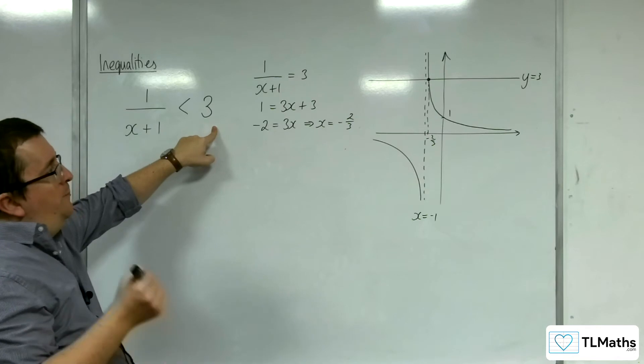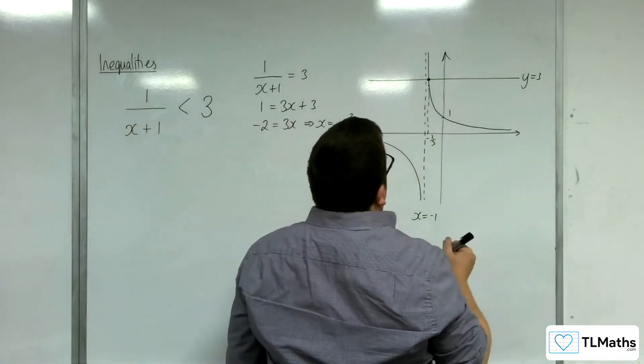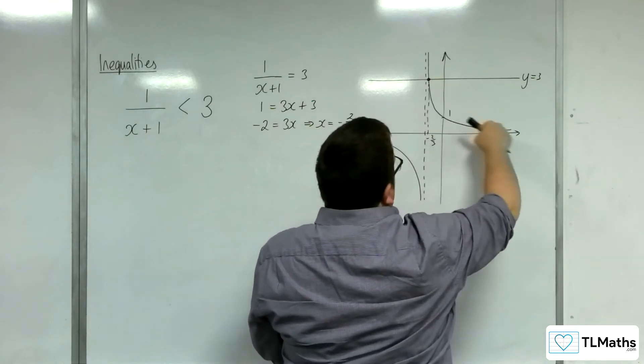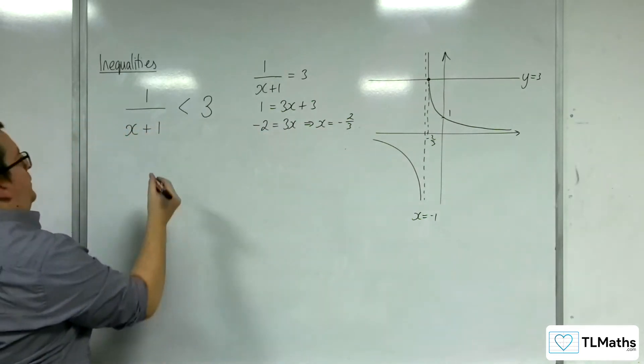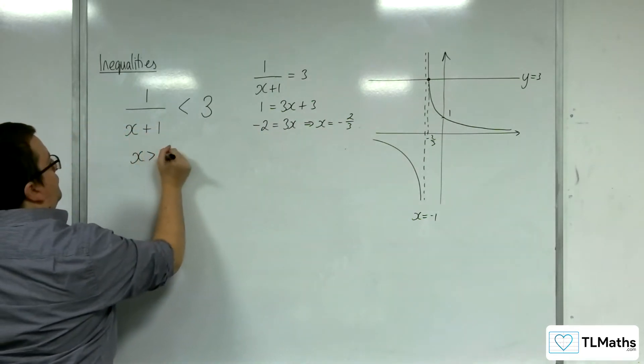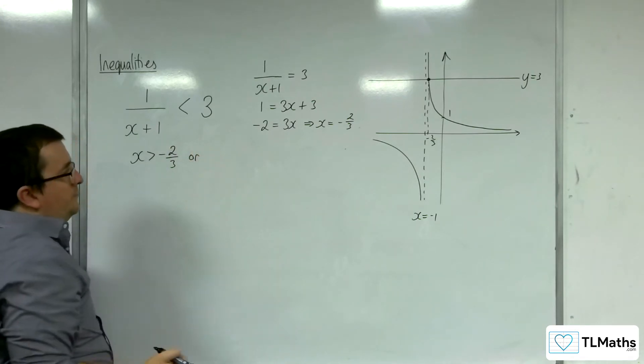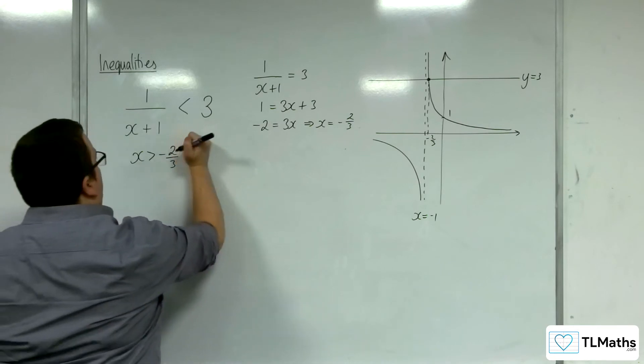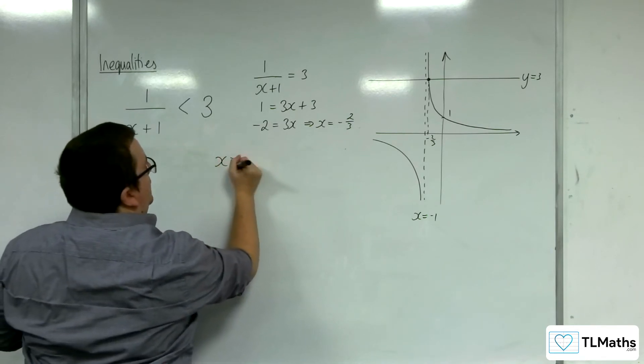Well, it's below 3 here. So for this portion of the graph, where x is greater than minus 2 thirds. Or, well, I did that region first, but maybe I shouldn't have done that region first. So, x is greater than minus 2 thirds.